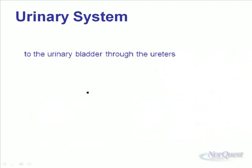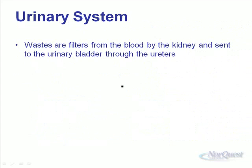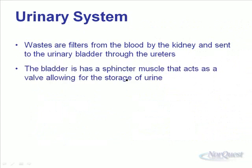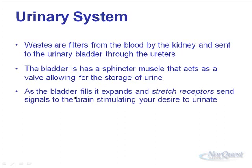This is also known as the urinary system because this is where we pee from. The wastes are filtered from the blood by the kidney and sent to the urinary bladder through the ureters. The bladder has a sphincter muscle that acts as a valve allowing for storage of urine. Our blood is continuously being cleaned and urine is continuously being produced, but we store it in the bladder for some time.